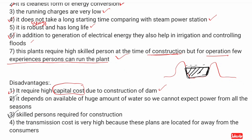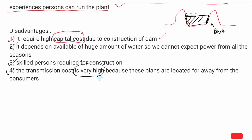Skilled persons are required for construction. A very important disadvantage is that transmission cost is very high, because these plants are located far away from the consumers.